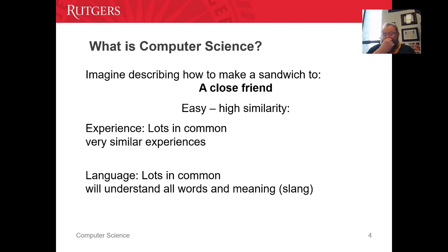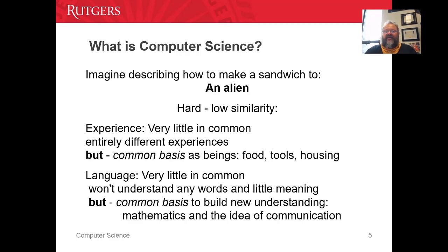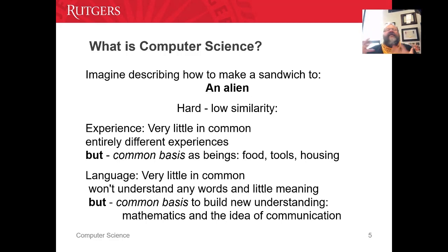The way we try to get that across is: imagine me trying to explain how to make a peanut butter and jelly sandwich to a close friend. That's easy because we have a lot of things in common — we speak the same language, both get hungry. Now, let's say when the aliens land and come flying out of their spaceship, I've got to teach the alien how to make a sandwich. Not an easy task.